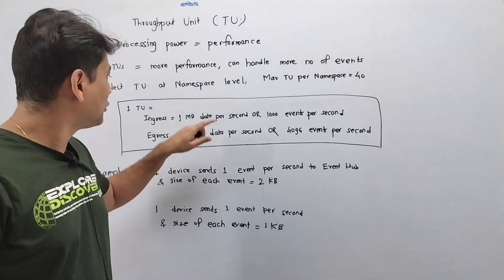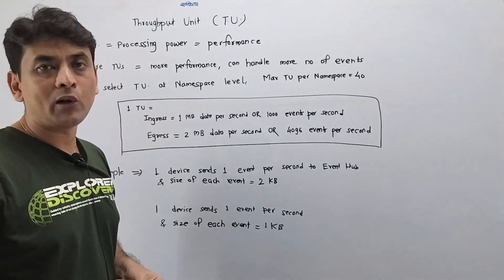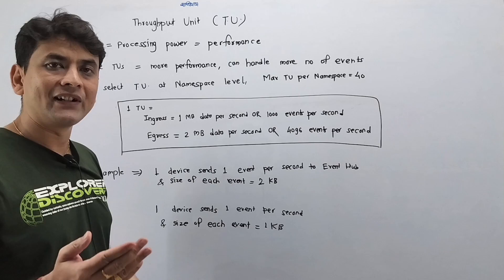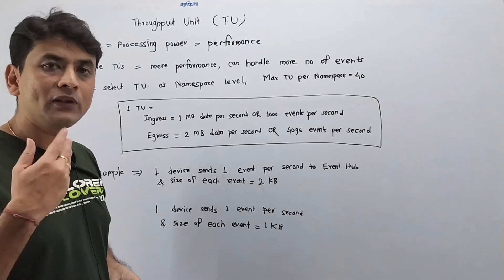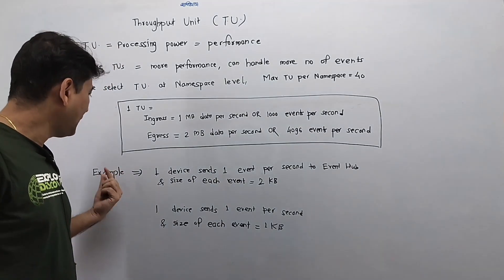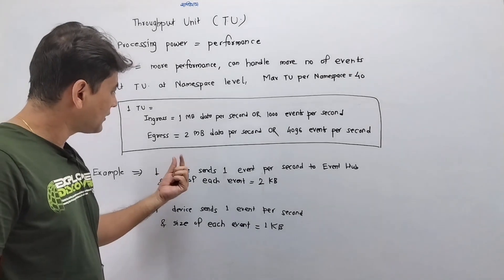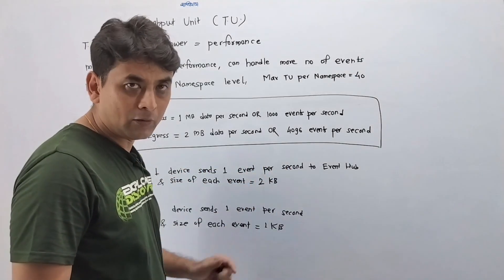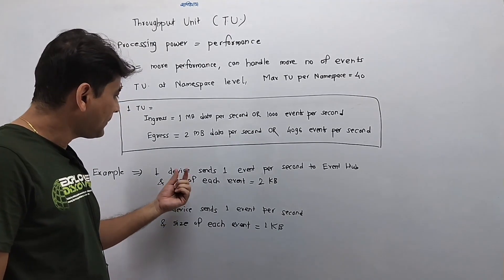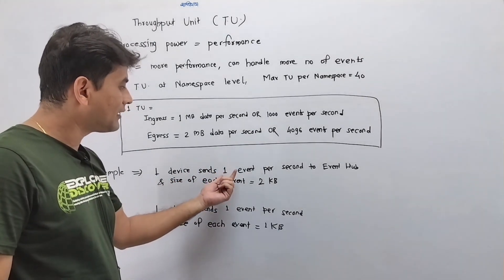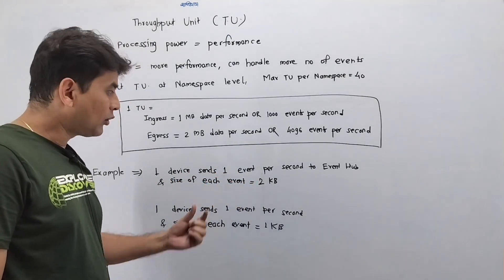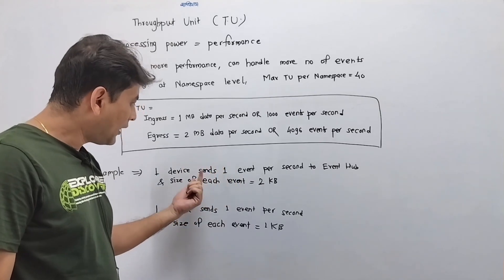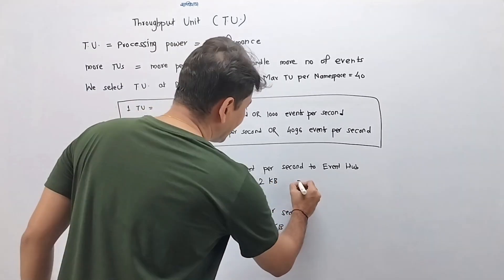I know with this explanation it might not be clear to you, so let's try to understand TU in detail with an example. Imagine you have one device which sends one event per second to Event Hub, and the size of each event for that device is 2 KB. In this case, one TU can handle 500 devices.